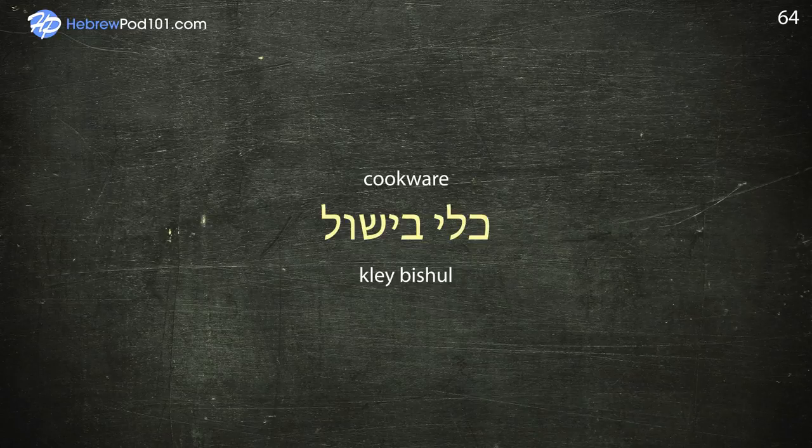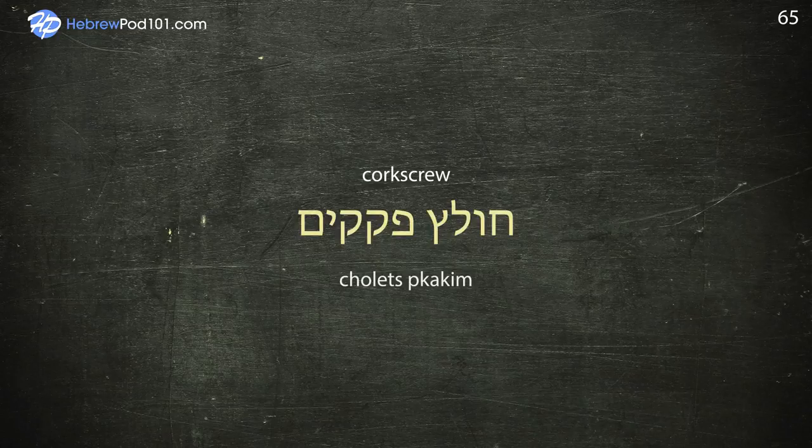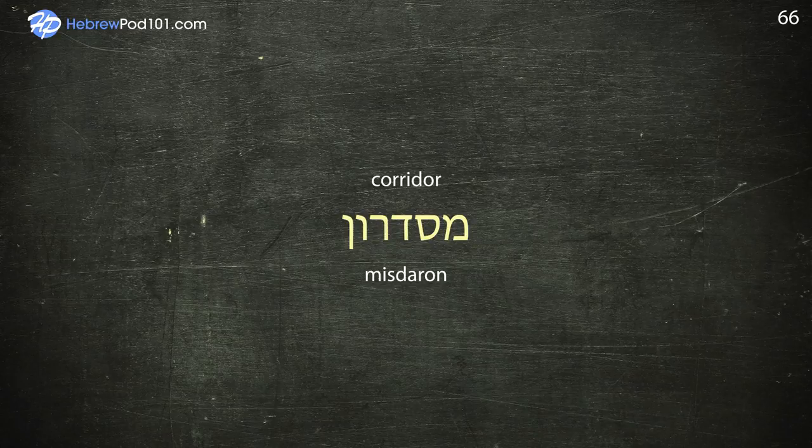Cookware — Klii Bishul. Corkscrew — Choletskakim. Corridor — Misadaron. Country — Medina.